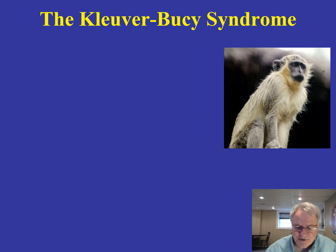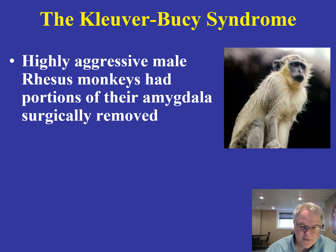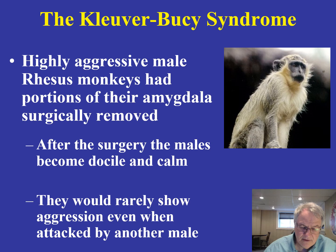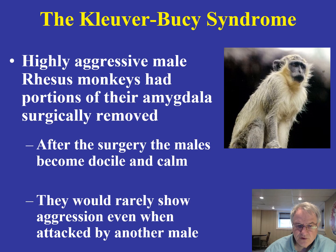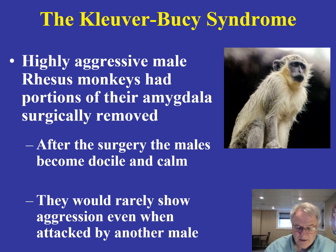A very interesting syndrome is the Kluver-Bucy syndrome. Research done in France in the 1970s involved highly aggressive male rhesus monkeys that had portions of their amygdala surgically removed. What was found was that they became very docile and calm afterwards — they wouldn't exhibit aggressive behavior and wouldn't protect themselves when attacked. This is very unusual for rhesus monkeys, and provides interesting evidence that the amygdala — part of the old brain — is involved in aggression.